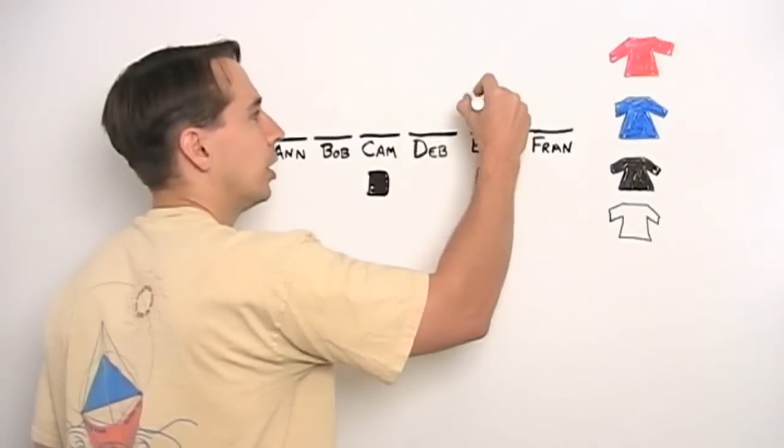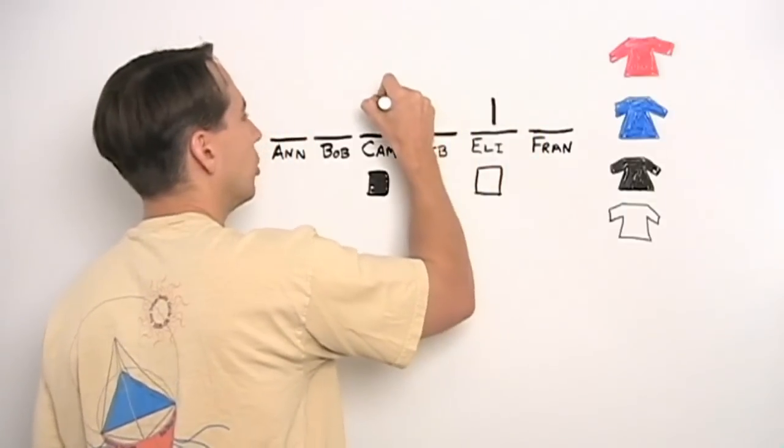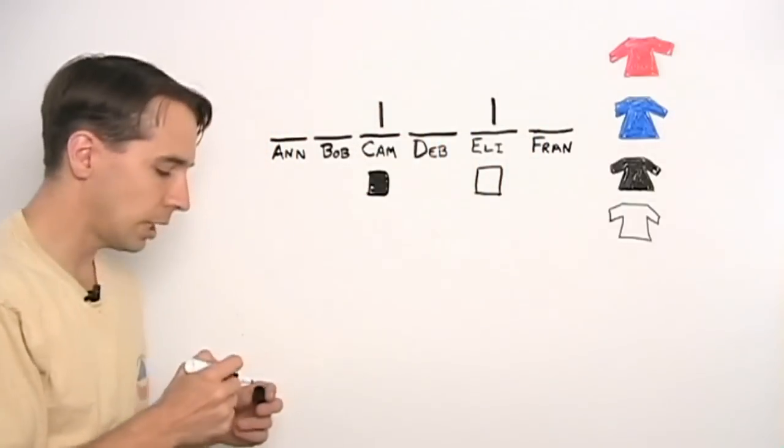So how many ways can they do it now? Well, clearly Cam and Eli, they only have one choice. They've made their choice. They're going to have to live with that.